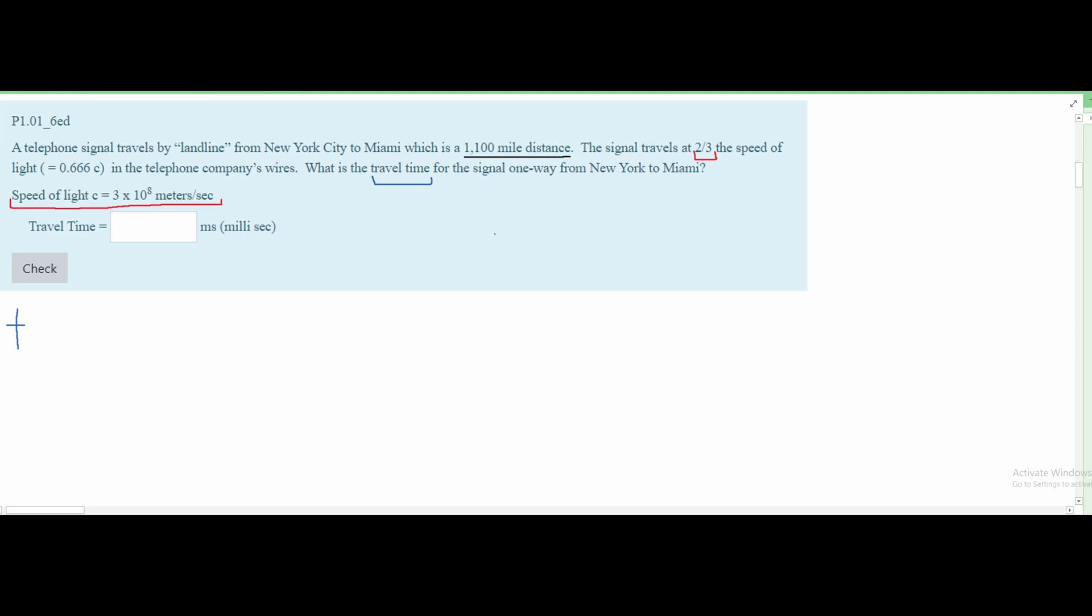But before we do that, we should do our conversions to make sure we are plugging in the proper numbers. We have the first distance, which is 1,100 miles. We don't measure in miles; we measure in meters, so we need to convert this. We have 1,100 miles over 1 equals 1 mile. We have to put how many meters are in one mile. If we do a quick Google search, we will see that one mile is equivalent to 1,609.344 meters.